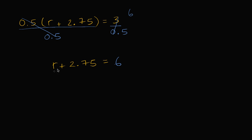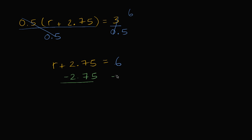Now to isolate r on the left hand side, I subtract 2.75 from both sides. On the left that simplifies to r, and on the right it's 6 minus 2.75. If you do this in your head: 6 minus 2 is 4, and taking away 0.75 from that gives 3.25.